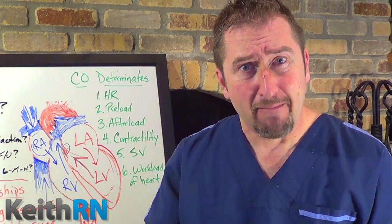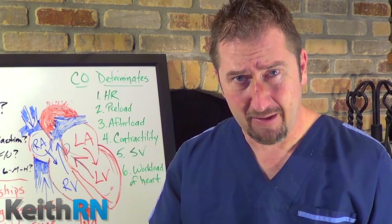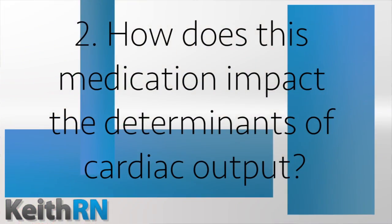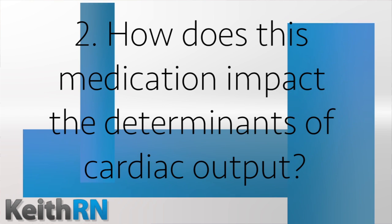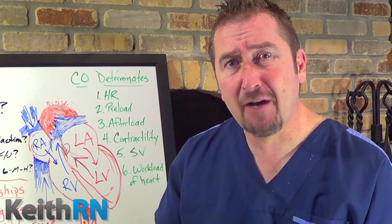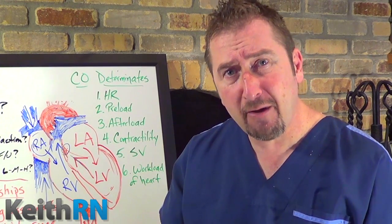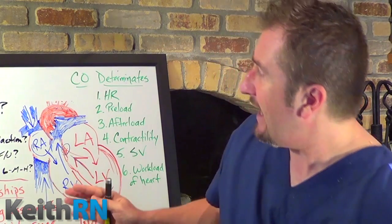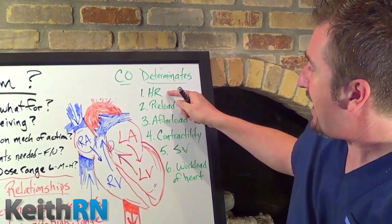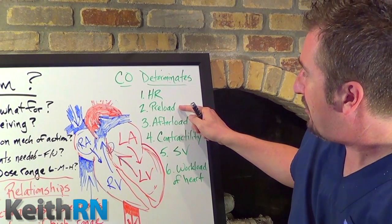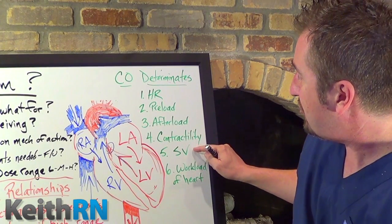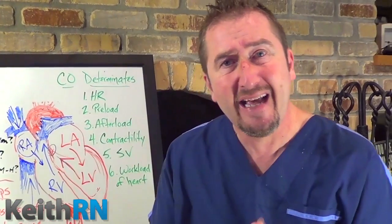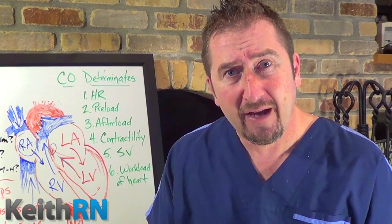The second principle that must be deeply understood to comprehend cardiac medications is: how does this medication affect the determinants of cardiac output? As discussed in the prior two videos, CO equals SV times HR, and how that is calculated involves heart rate, preload, afterload, contractility, and stroke volume — and ultimately, how does this cardiac medication decrease the workload of the heart?